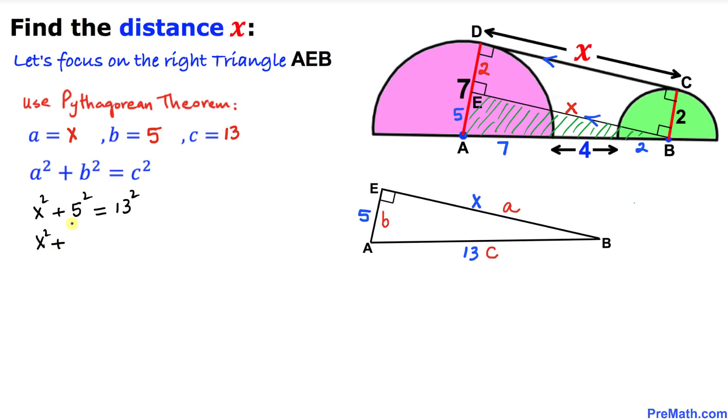Let's simplify. x squared plus 5 squared is 25, equal to 13 squared is 169. Let's move this 25 on the right hand side. So we got x squared equal to 169 minus 25. So that means x squared turns out to be 144.